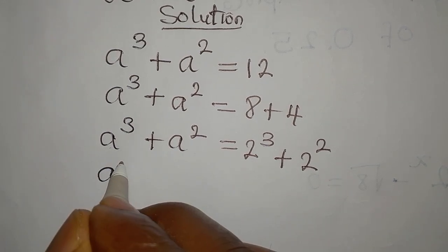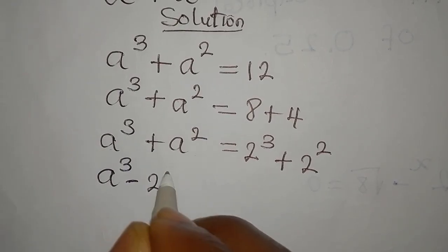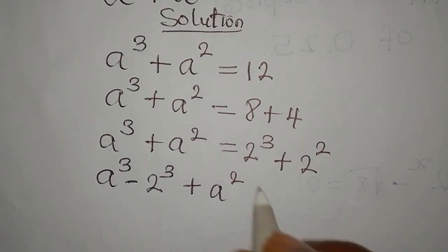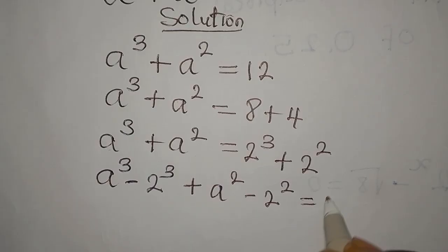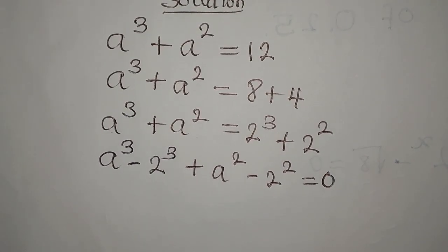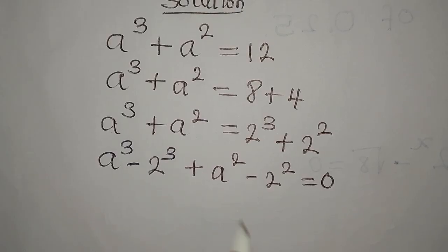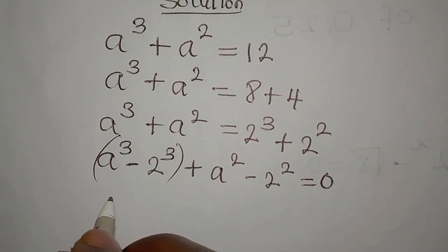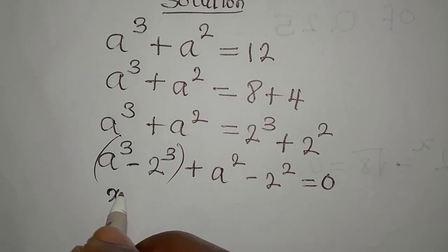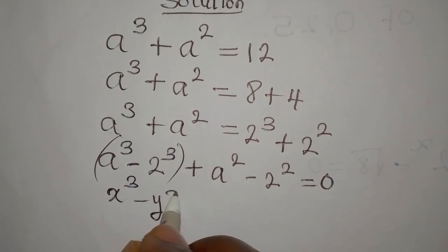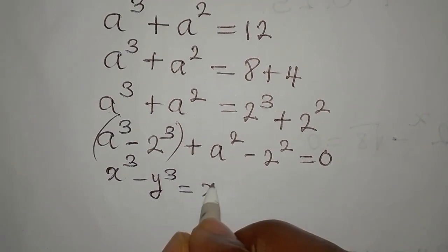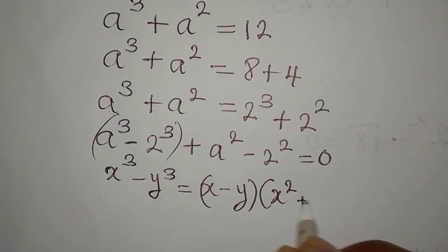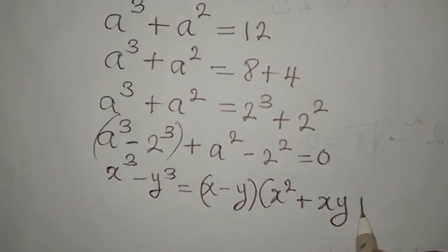We rearrange so that a³ minus 2³ will come together, then plus a² minus 2², and everything equals 0. This expression a³ minus 2³ is what we call the difference of two cubes — it's an identity: x³ - y³ = (x - y)(x² + xy + y²).